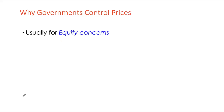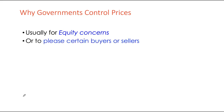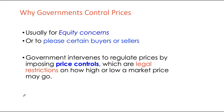Governments typically intervene in the market outcome if they have equity concerns — they think that the market outcome is not the fair outcome, not how resources should be distributed in that economy. For equity concerns, they feel they need to either protect the buyers or the sellers of that particular product or service. We see government intervening in the form of price controls, which are legal restrictions on how high or low a market price may go.